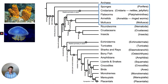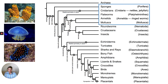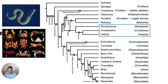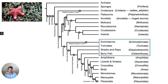There are sponges, cnidarians, flatworms, annelids, and then molluscs — that's kind of that first big grouping. Then we've got roundworms, which are nematodes, crustaceans, and insects.